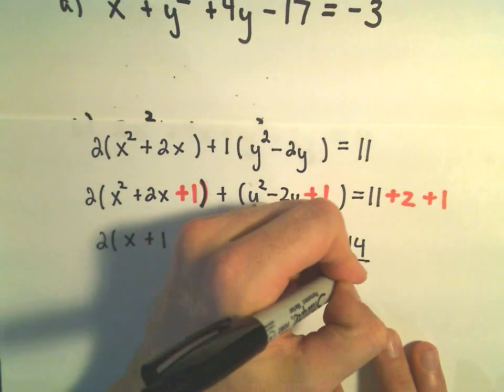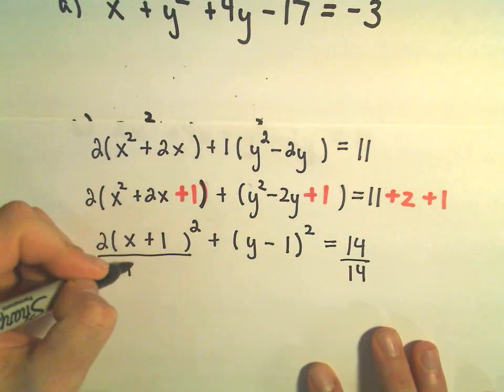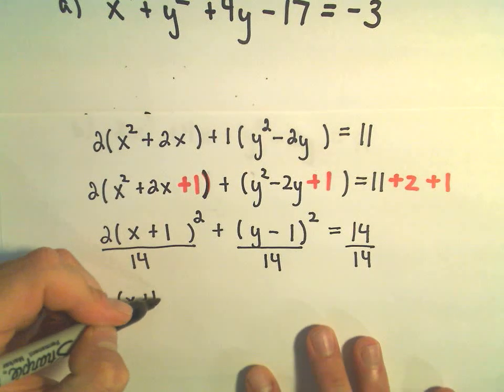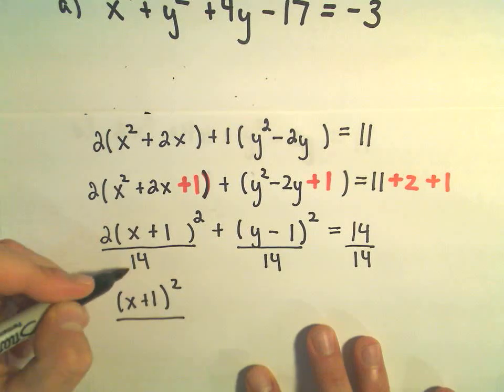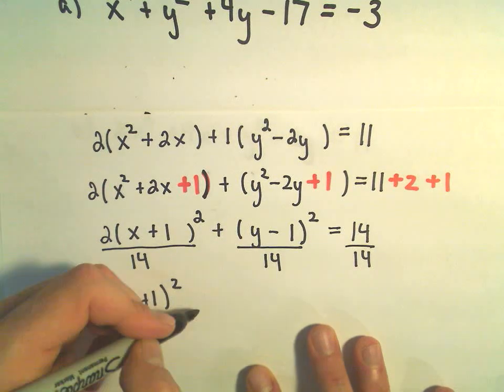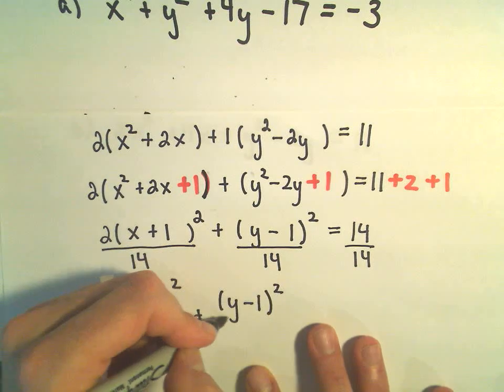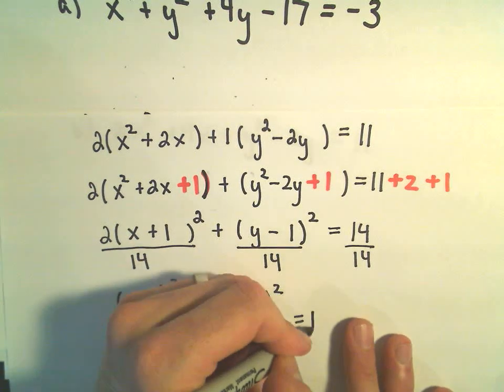So we could divide both sides by 14 if we wanted to put this in standard form even. So it looks like we would have x plus 1 squared. 2 over 14 would reduce to 1 7th plus y minus 1 squared over 14 equals 1.